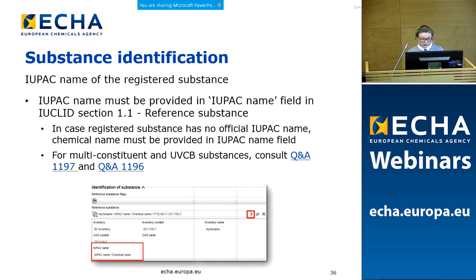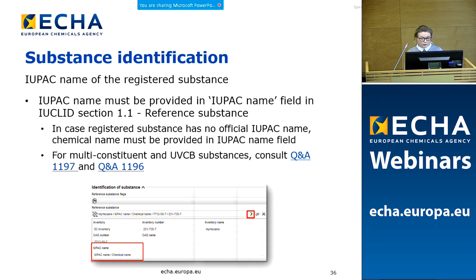Starting with substance identification, the first requirement is to provide the IUPAC name in IUCLID Section 1.1 under the reference substance. In case your registered substance has no official IUPAC name, you must provide the chemical name in the IUPAC name field. For multi-constituent and UVC-B substances, it's not always straightforward to derive the IUPAC name, so you are asked to consult good examples through Q&As on the ECHA website. Here is a screenshot of the relevant IUCLID section under reference substance — you can navigate to it by clicking the small arrow highlighted in red to open and edit the IUPAC name field.